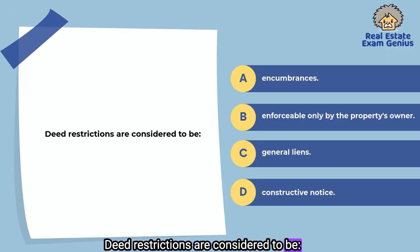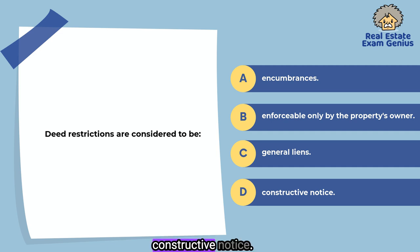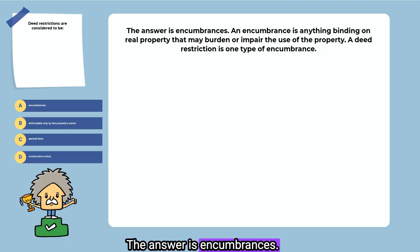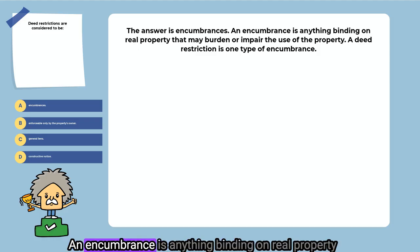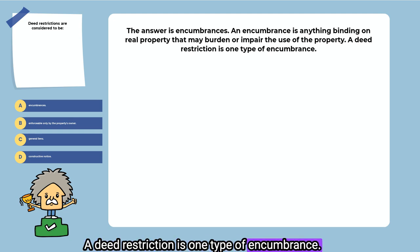Restrictions are considered to be: encumbrances, enforceable only by the property's owner, general liens, or constructive notice. The answer is encumbrances. An encumbrance is anything binding on real property that may burden or impair the use of the property. A deed restriction is one type of encumbrance.